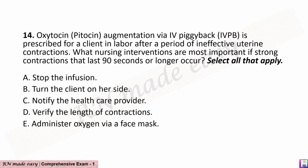Question 14. Oxytocin (Pitocin) augmentation via IV piggyback (IVPB) is prescribed for a client in labor after a period of ineffective uterine contractions. What nursing interventions are most important if strong contractions that last 90 seconds or longer occur? Select all that apply. A. Stop the infusion. B. Turn the client on her side. C. Notify the health care provider. D. Verify the length of contractions. E. Administer oxygen via a face mask.